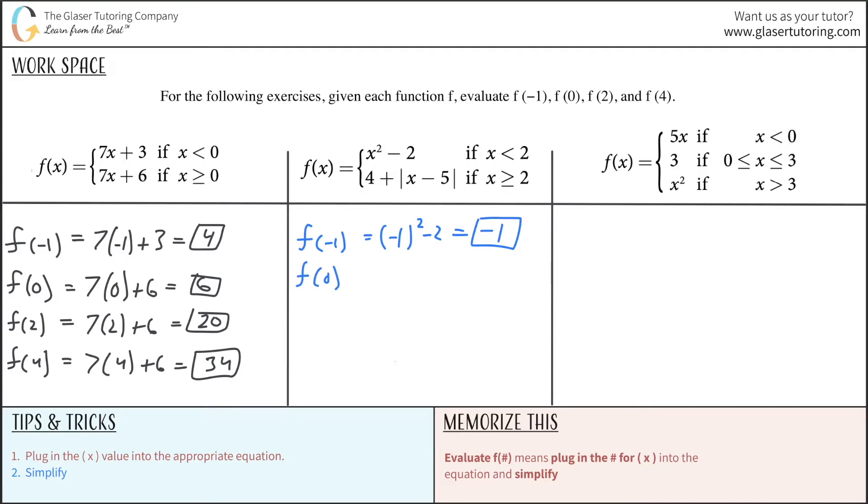Next one was going to be f of 0. Again, 0 is still less than 2, so therefore I'm going to use the same equation. So this is 0 squared minus 2. This should simply be negative 2.